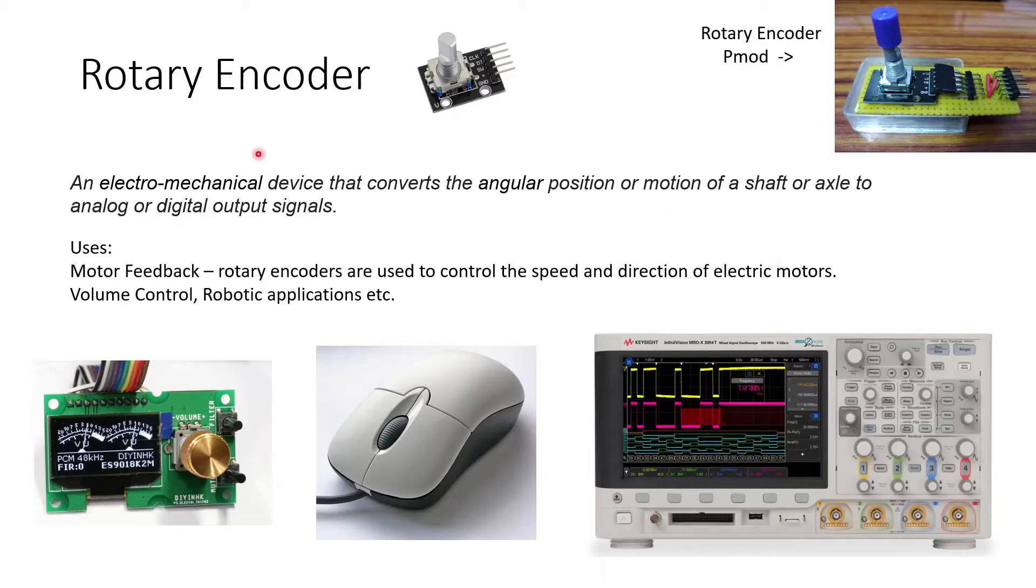Some common places where we find this rotary encoder are these three things. First one is the volume control. You might have used some CD players or some MP3 players wherein we have the volume control. You can keep on rotating it. It won't stop. Usually, when you have potentiometers in olden players, it will stop like from low to high. But whereas the rotary encoders, you can keep on rotating it.